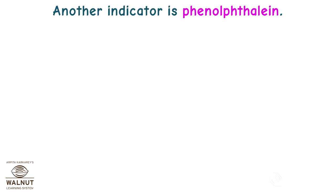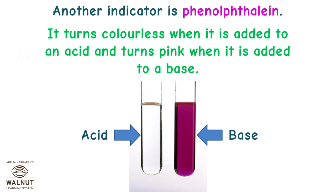Another indicator is phenolphthalein. It turns colourless when it is added to an acid and turns pink when it is added to a base.